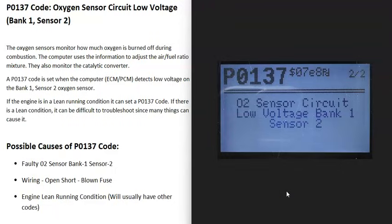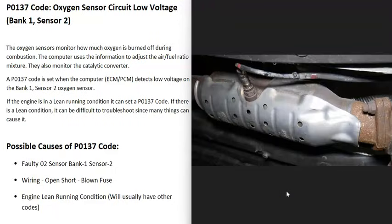What are some possible causes of a P0137 code? The first thing that could cause this is a bad bank one sensor two O2 sensor. This is the second sensor going down on the exhaust, located either right on the catalytic converter or right after it. It's also called the downstream O2 sensor.